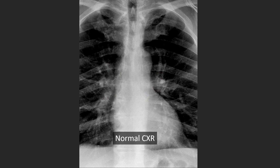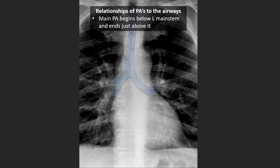The key thing here is the relationship of the arteries to the airways, because we can't really see the arteries that well, but we can usually make out the airways on the chest radiograph. The main pulmonary artery begins just below the left main stem and typically ends a couple centimeters just above it — you can see its relationship to the left main stem airway in this area here.